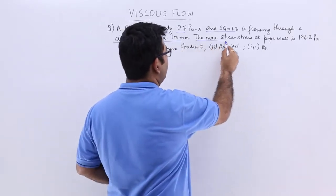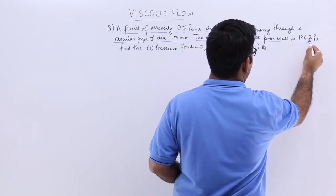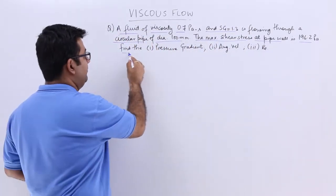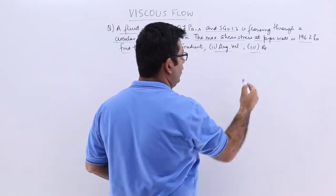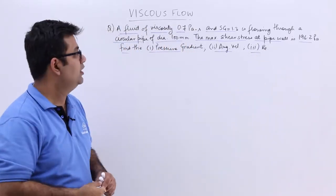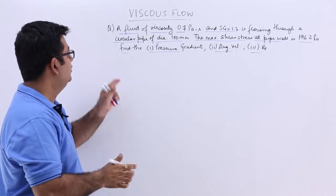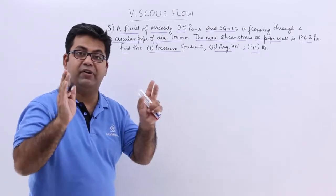The maximum shear stress at pipe wall is 196.2 pascals. We have to find the pressure gradient, the average velocity, and the Reynolds number for this flow. So let's get to solving this question. First of all, let's write down the given data.